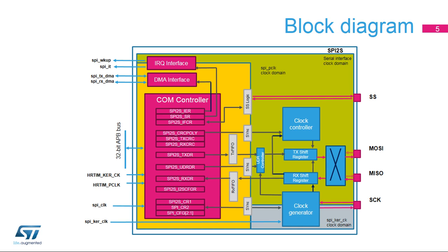The SPI master needs at least an active kernel clock as it has to output the clock signal for the slave. The SPI slave can transfer data without any internal clock signal, as the serial interface domain is fully clocked externally via the SCK pin. All of the data passes through the receive and transmit buffers via their specific interfaces.